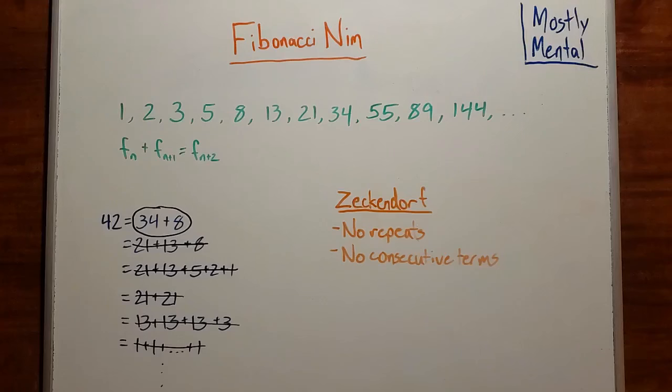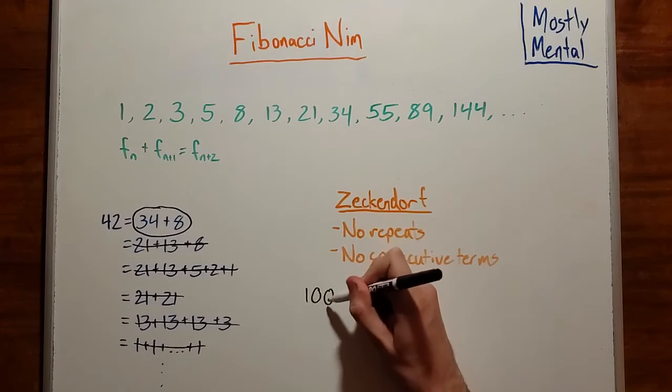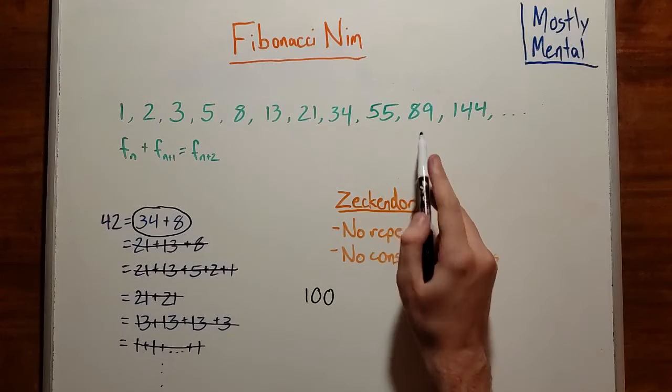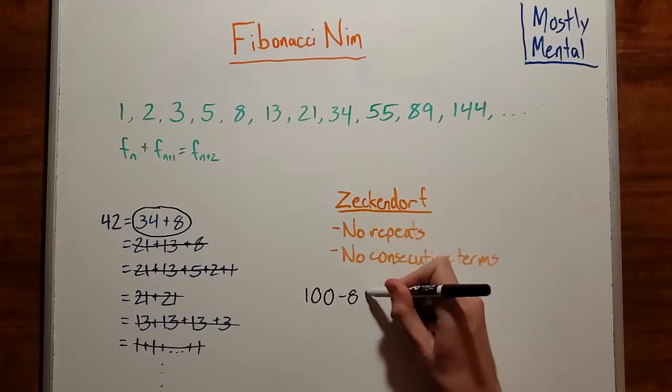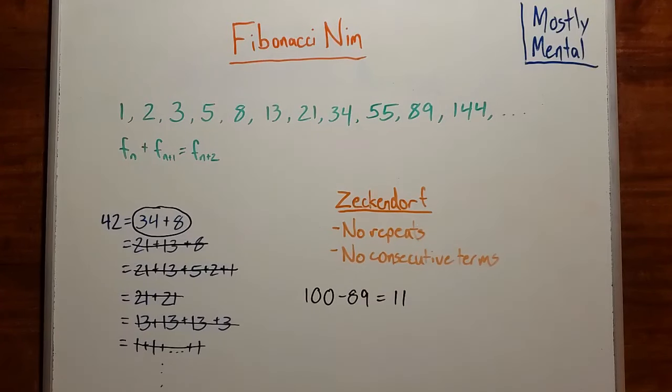Finding this representation is pretty simple. We take our number, find the largest Fibonacci number we can fit into it, and subtract that out. So if our number was 100, we find the largest term that fits in, in this case 89, and subtract that out to get 11. And then we repeat until we get down to 0.